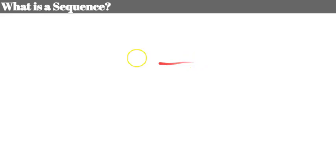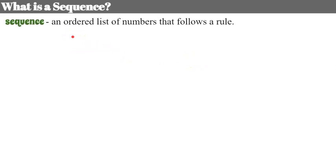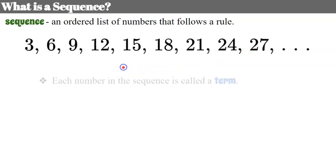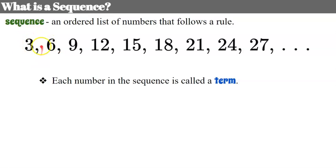A sequence is an ordered list of numbers that follow a rule. We have a list of numbers here: 3, 6, 9, 12, 15, 18, 21, 24, 27. It's a sequence of numbers, and each number in the sequence is called a term. So 3 is a term, 6 is a term, 9 is a term.